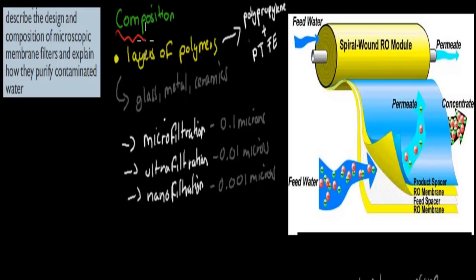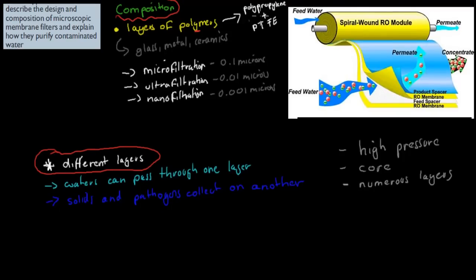So they're the composition. So what are they made up? They are made up of these layers of polymers. Now these polymers can be plastic type polymers, such as polypropylene or PTFE. There's a couple more as well. There's maybe two or three other ones that often get mentioned. But I would recommend, if you do remember a name, maybe don't try aiming for six names, maybe just one or two. Polypropylene and PTFE.